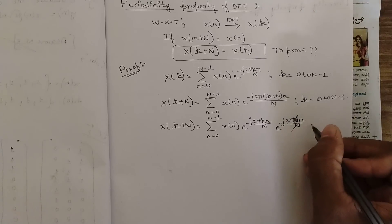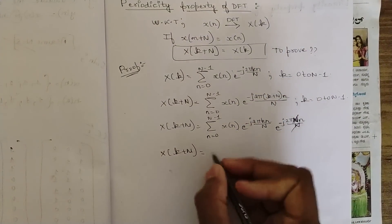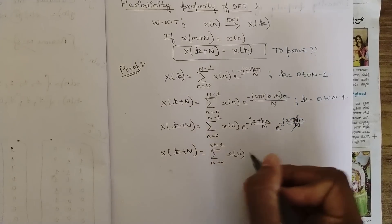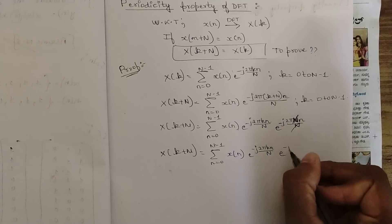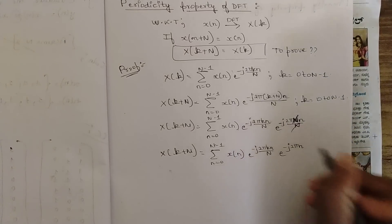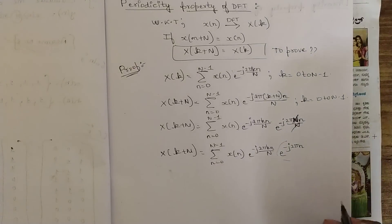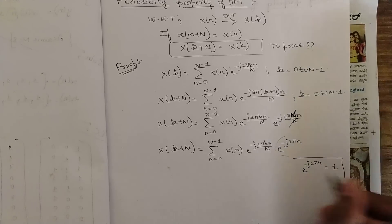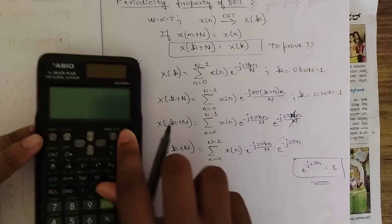After cancelling N in the second term, we are left with X(k + N) = Σ (n=0 to N−1) x(n) · e^(−j2πkn/N) · e^(−j2πn). Now we have the term e^(−j2πn), and there is a known result that e^(−j2πn) = 1. Let me verify this using the calculator for different values of n.